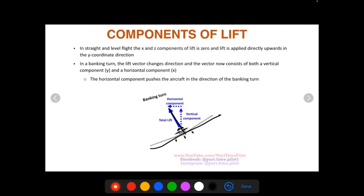The horizontal component is actually what pushes the aircraft in the direction of the banking turn. So when you're asked what makes an aircraft turn, it's the horizontal component of lift caused by the change in direction of the total lift vector.